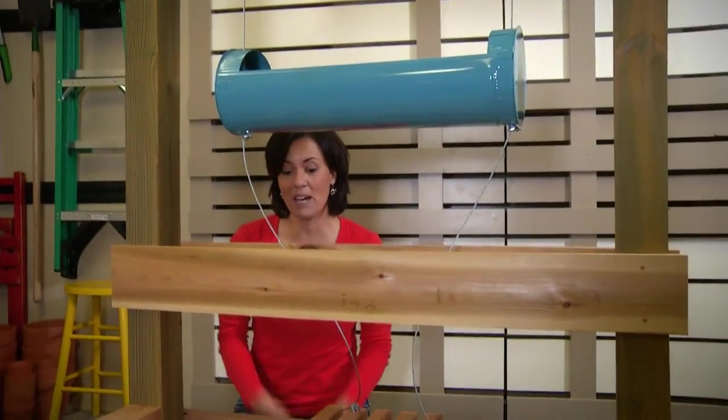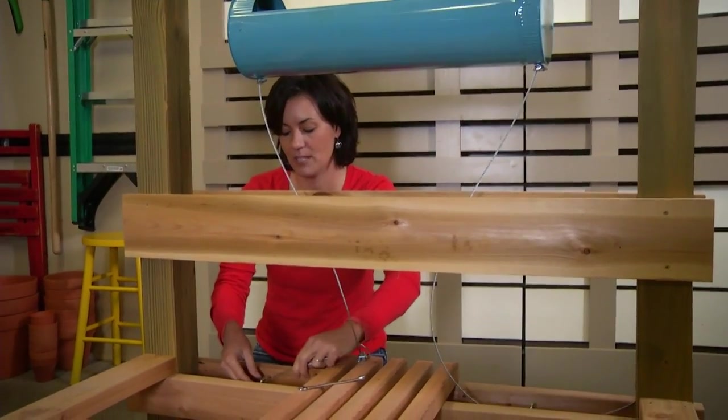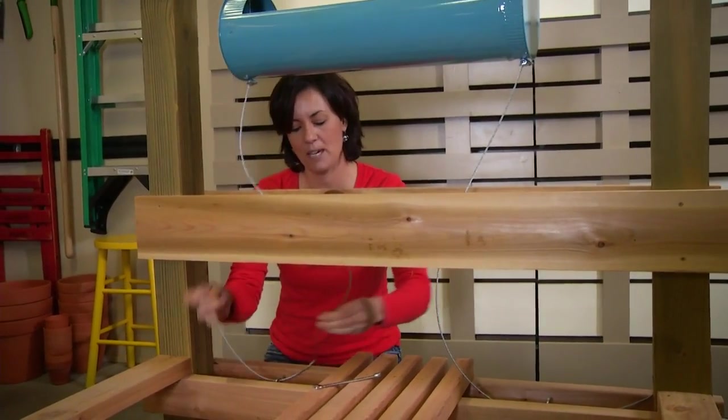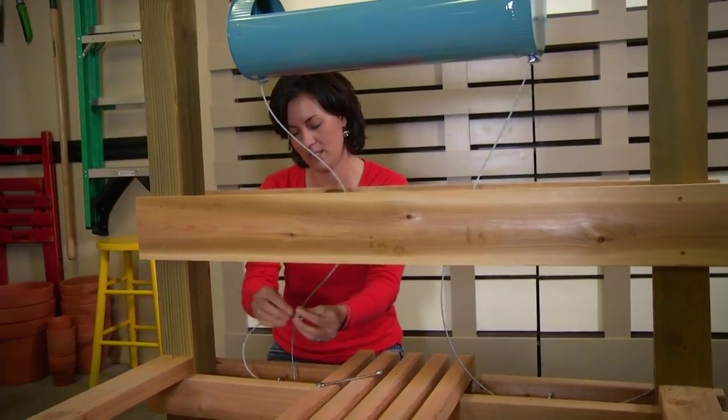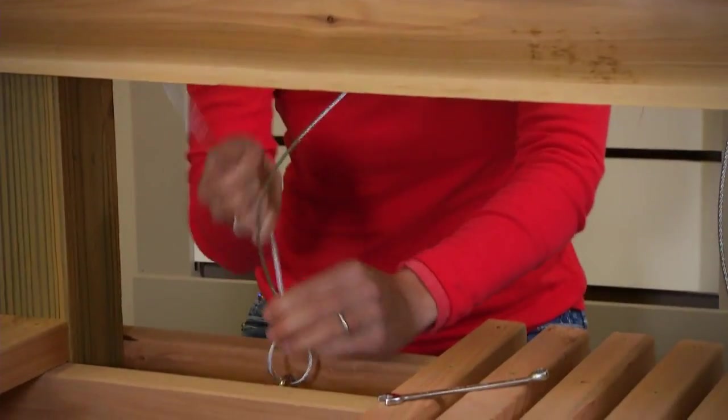To secure the bottom, thread the wire through the ice screw, back up through the bolt, and pull it to tighten.